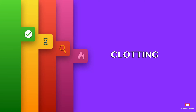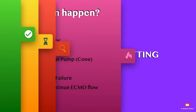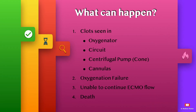Hello everyone. Under the ECMO troubleshooting simplified series, today we will see about clotting on ECMO. Clots can be seen in the oxygenators, circuit, centrifugal pump, and on the cannulas.